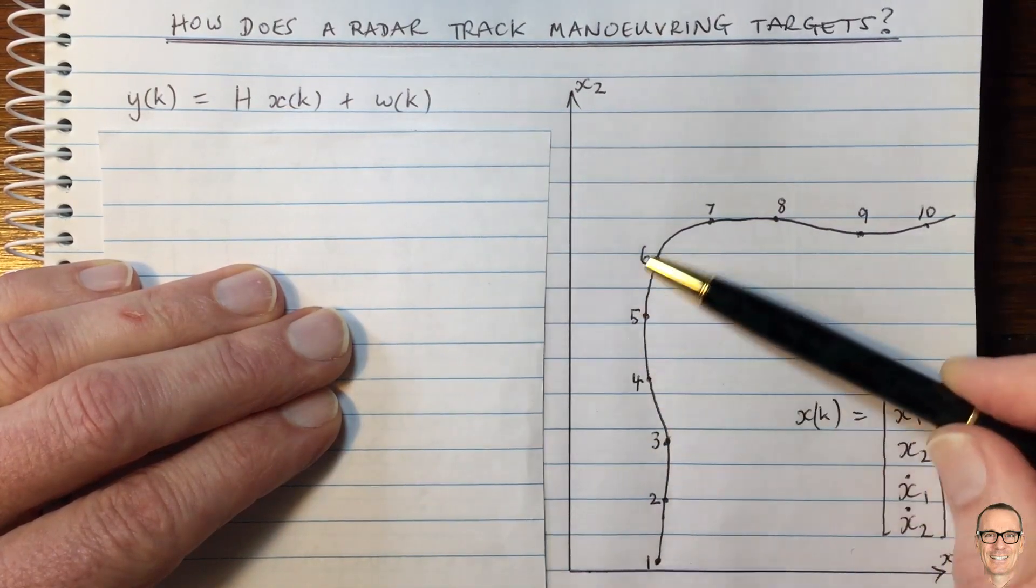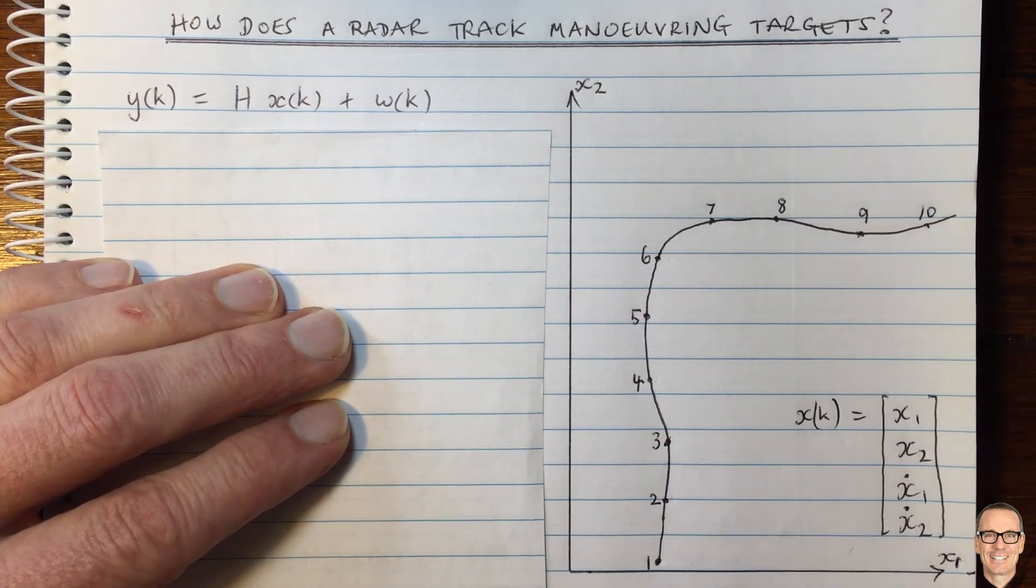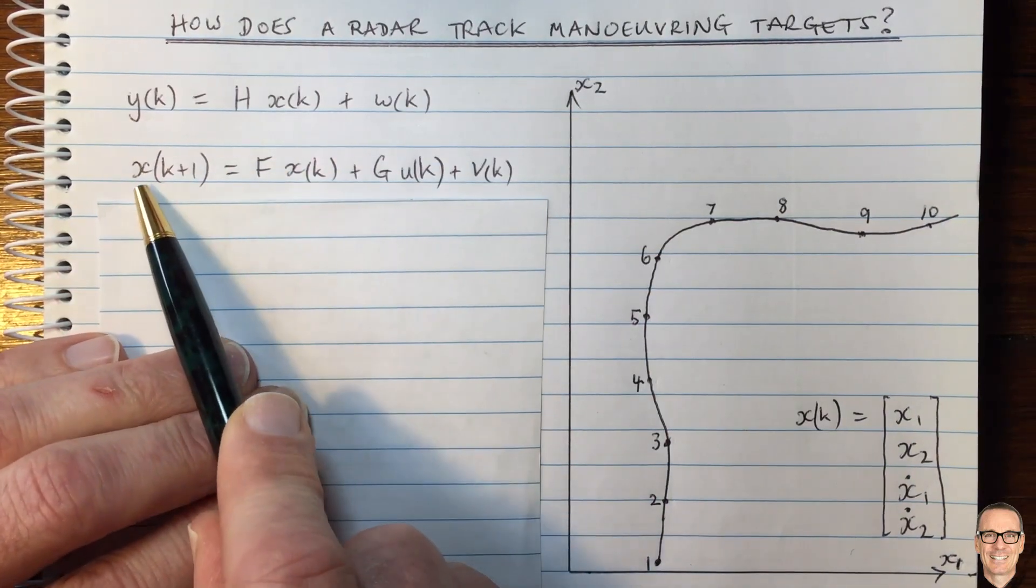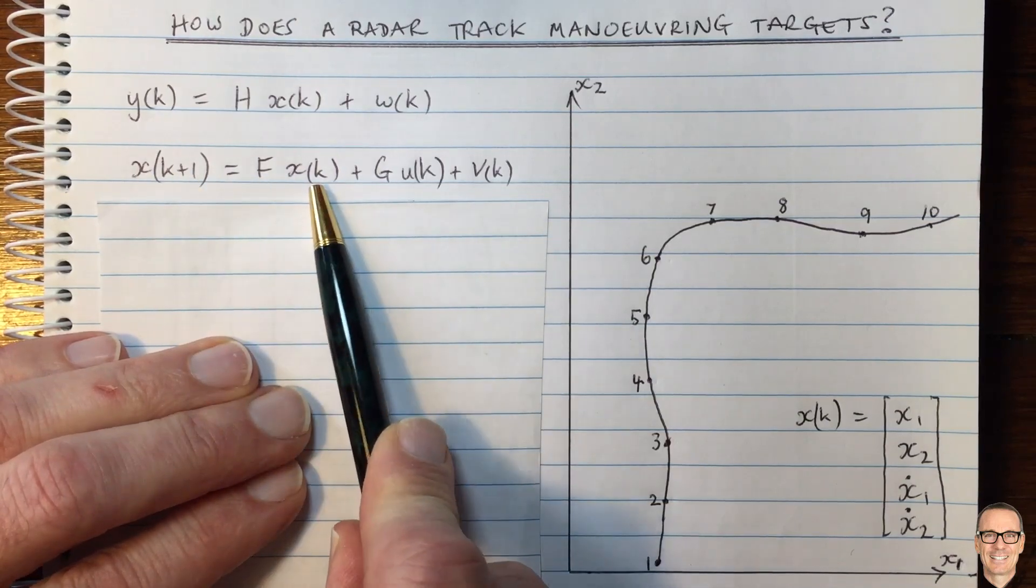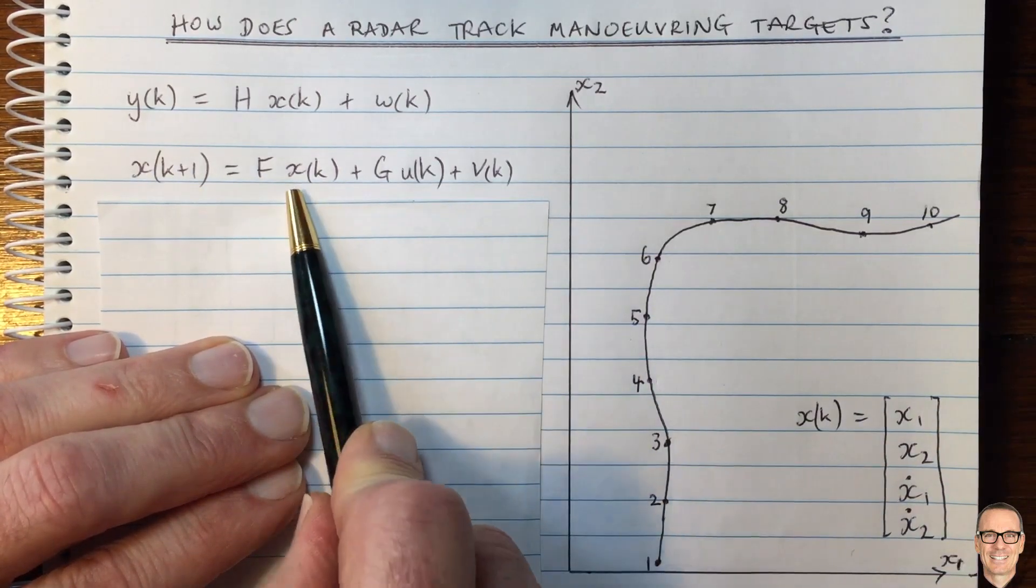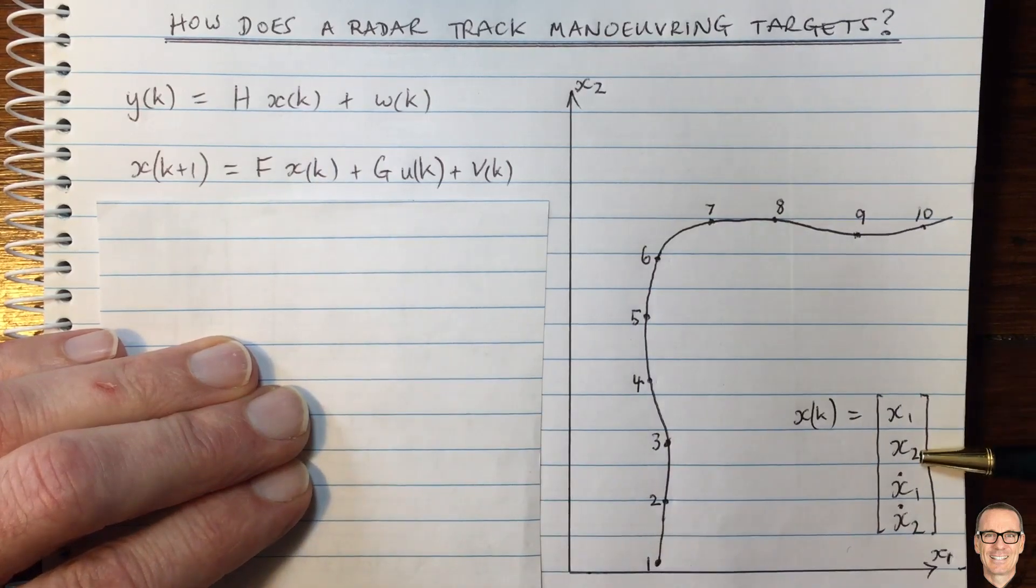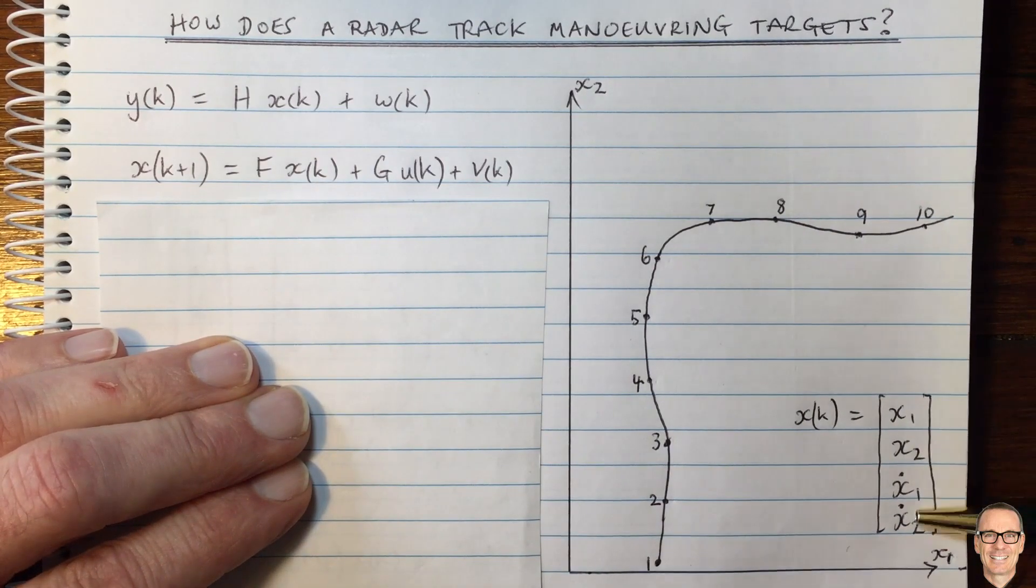And so a model for this might be this, where at each of the locations when the radar hits the target, we've got the current state, which again is the x1 and x2 positions and their velocities.